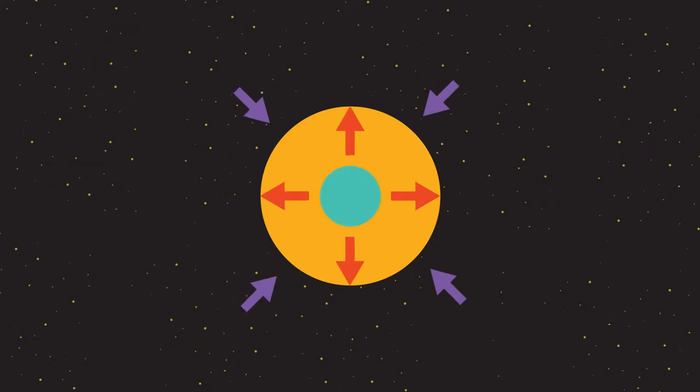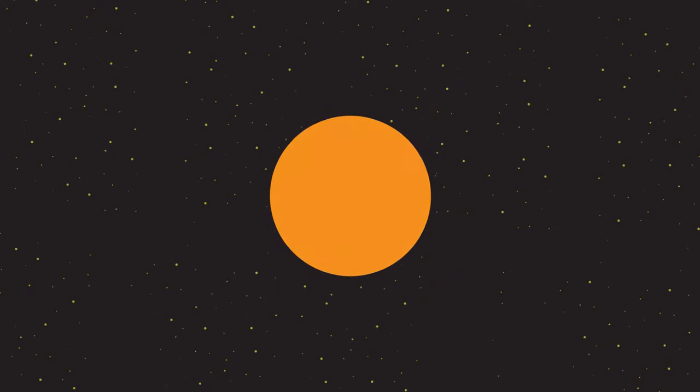Up until now, the nuclear fusion has been occurring between hydrogen nuclei. But eventually, the hydrogen begins to run out. Now the outward force of fusion is less than the inward force of gravity. This causes the star to collapse inward and the temperature to increase.